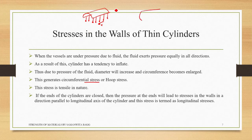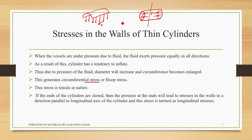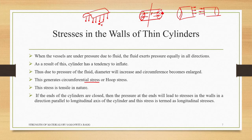If the ends of the cylinder are closed, the pressure at the ends will lead to stresses in the walls in a direction parallel to the longitudinal axis of the cylinder, and this stress is termed longitudinal stress. When both ends are closed, the pressure on these end surfaces causes the cylinder to tend to break between the two ends, elongating along its length.